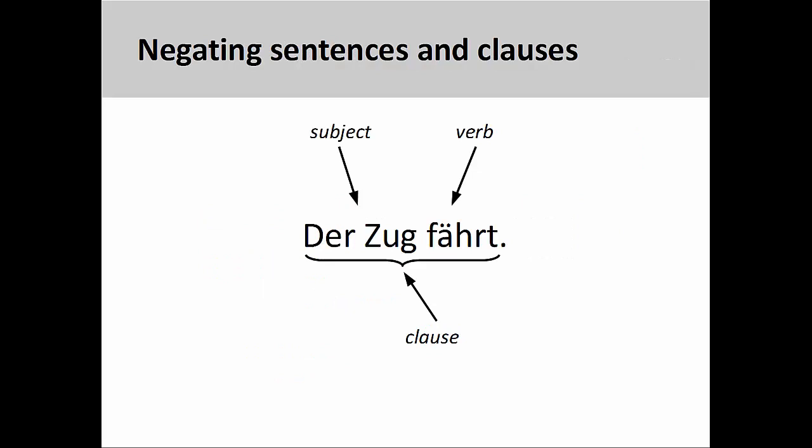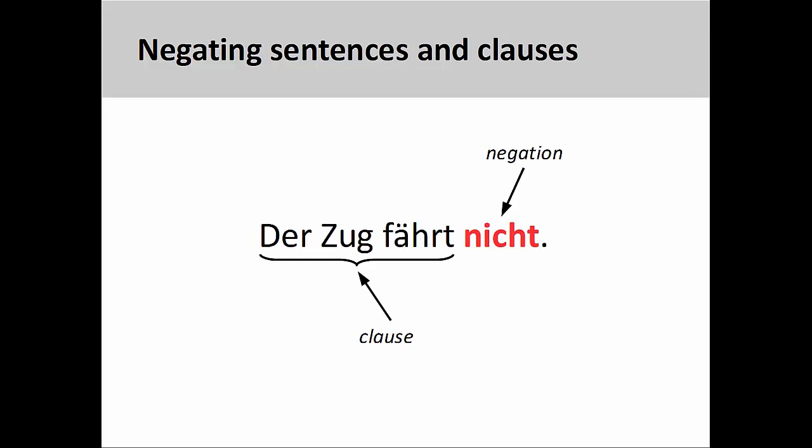When negating entire sentences and clauses, however, nicht must come at the very end. The sentence you see here, der Zug fährt, is a simple clause consisting of a subject, der Zug, and a verb, fährt. To negate this clause, you simply need to insert nicht at the very end: der Zug fährt nicht — the train is not running.